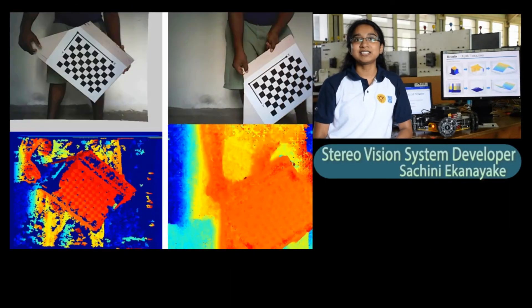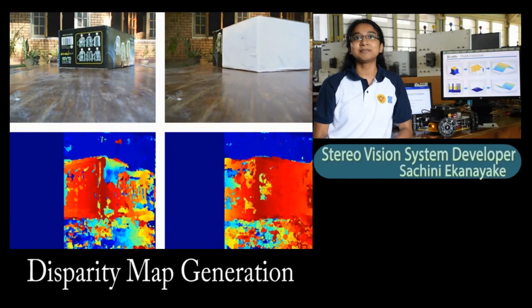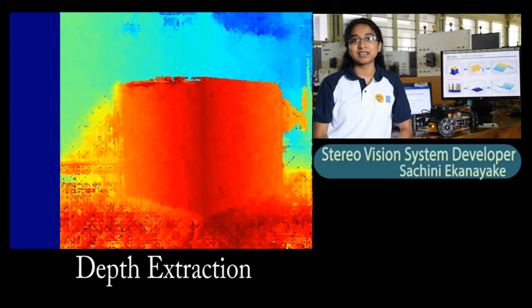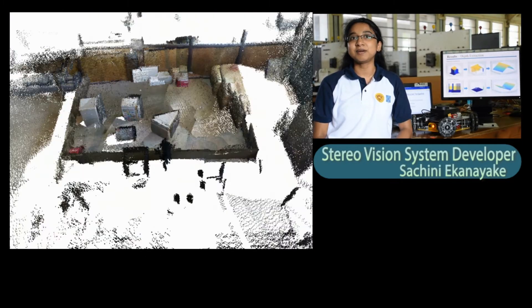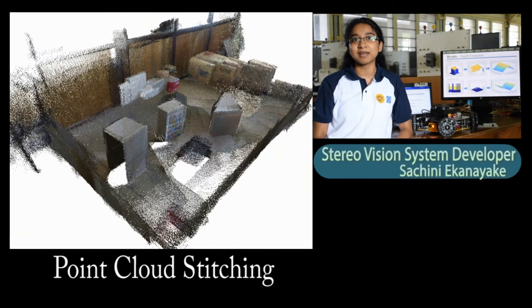First with stereo camera we tested disparate map generation and depth extraction, but they consisted of noise. So we moved to RGB sensor where a 3D map of the environment was generated by point cloud stitching.